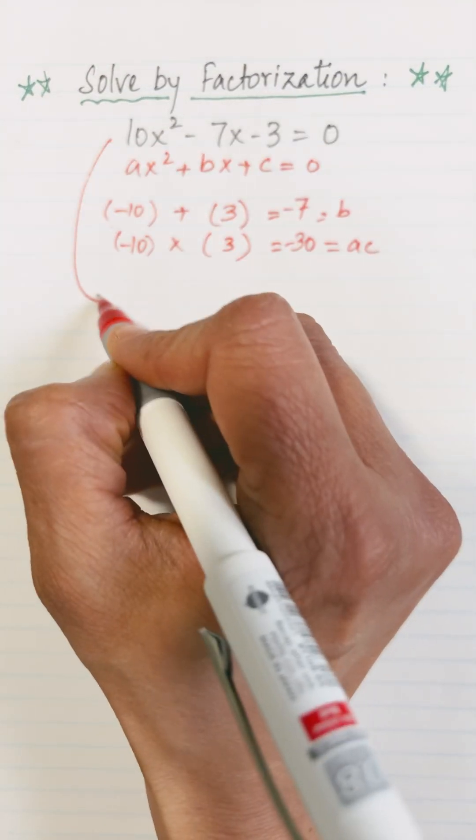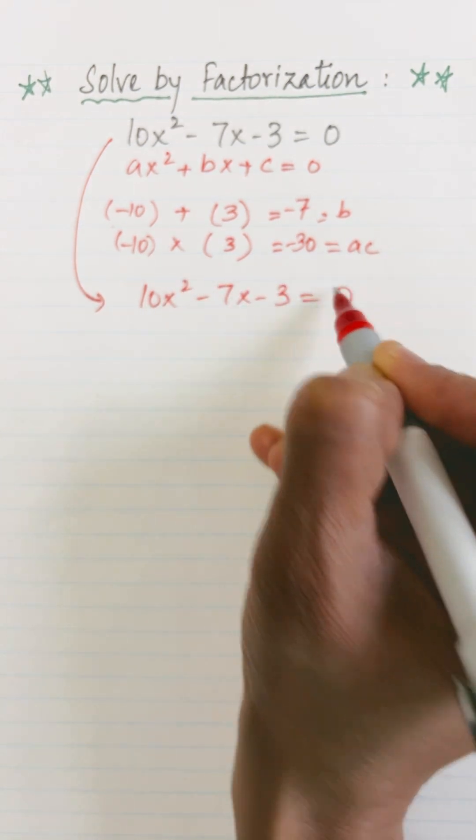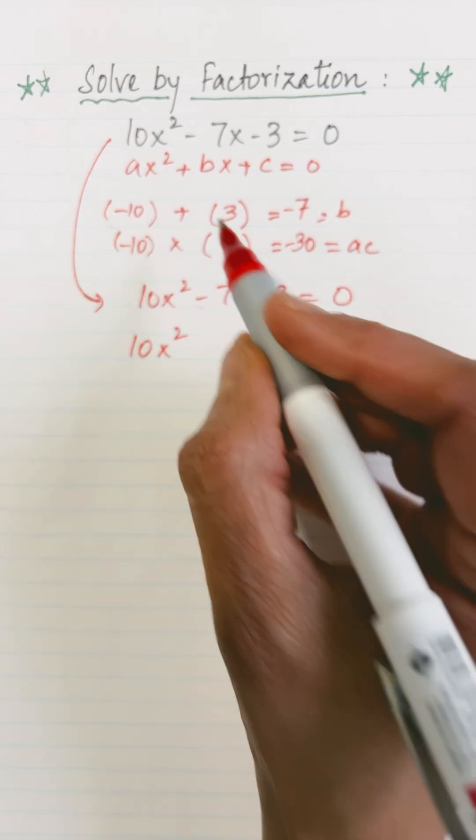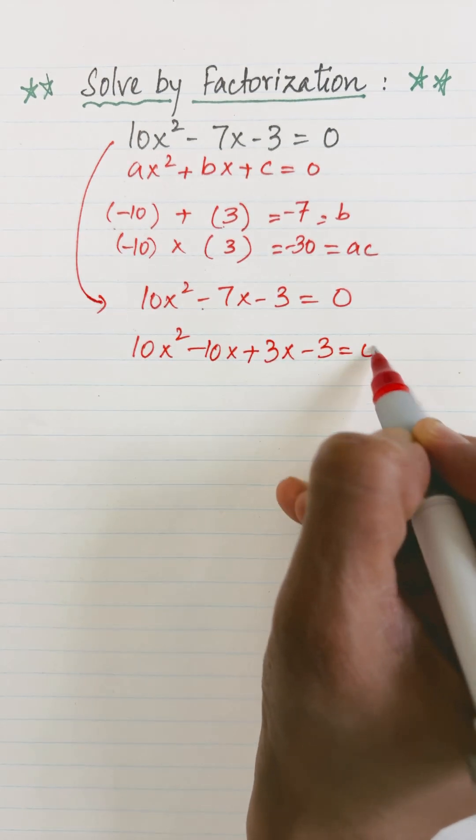So I can write this quadratic equation as 10x² - 7x - 3 = 0. The middle term -7x can be written as -10x + 3x, so we have 10x² - 10x + 3x - 3 = 0.